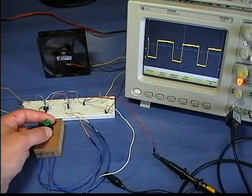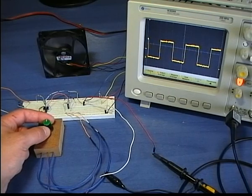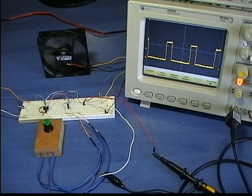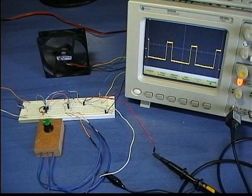As I rotate the potentiometer to increase the speed, I actually increase the period of the high level of the pulse. To decrease the speed, I decrease the high period of the pulse.